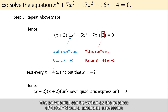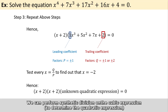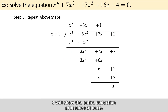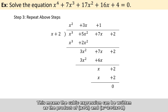The polynomial can be written as the product of x plus 2 and x squared plus 3x plus 1. We can then perform the synthetic division on the cubic expression. The idea is the same as before, so I will show the entire deduction procedure at once. This means the cubic expression can be written as the product of x plus 2 and x squared plus 3x plus 1.